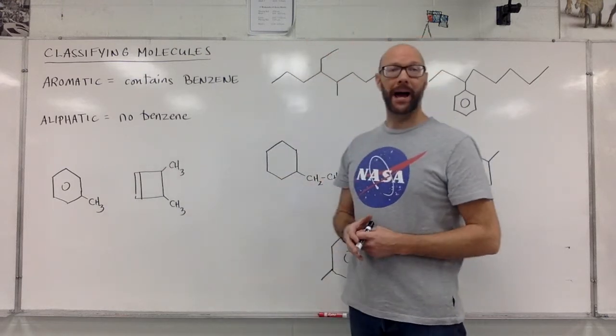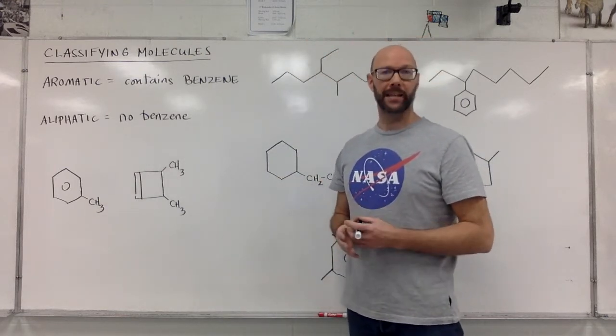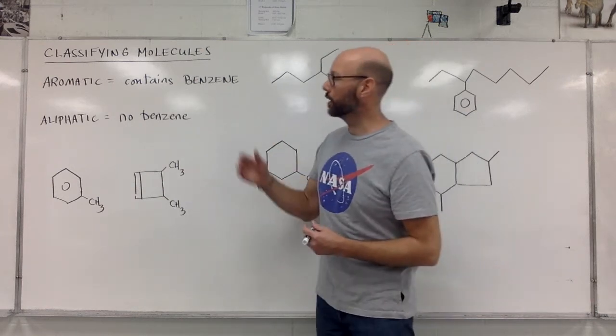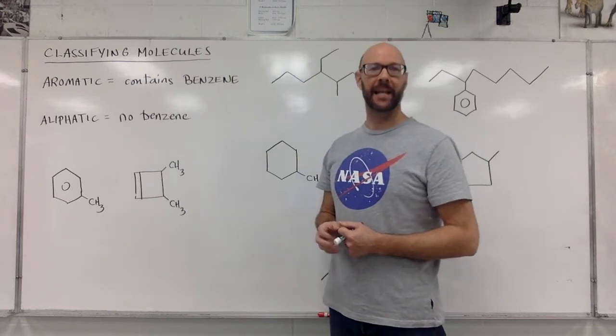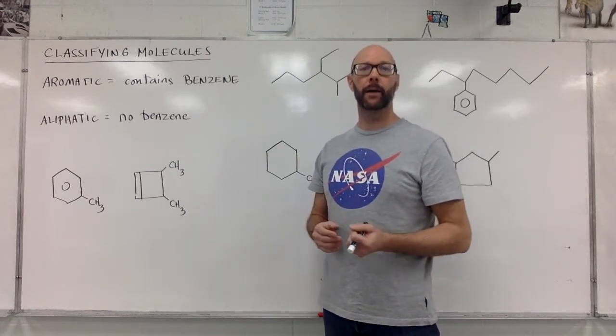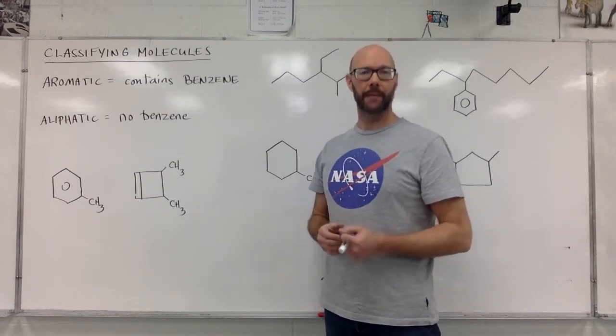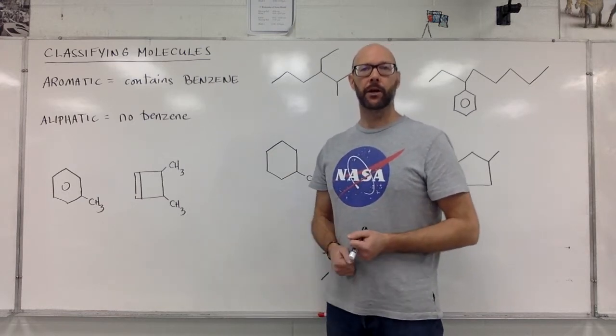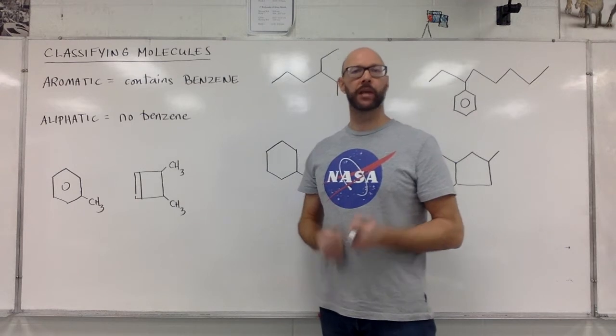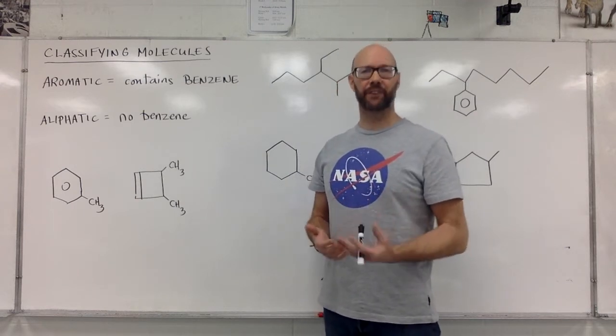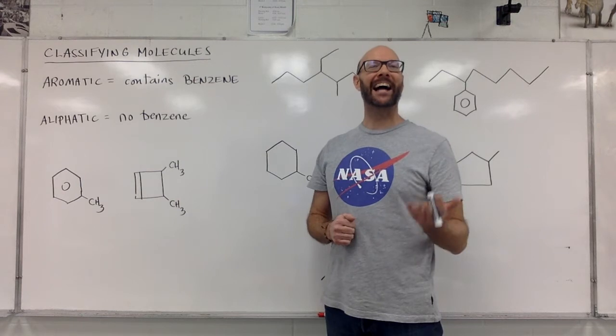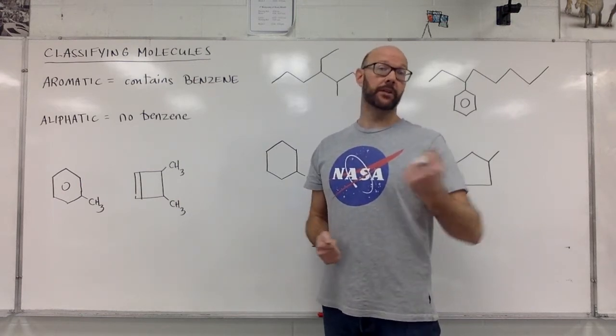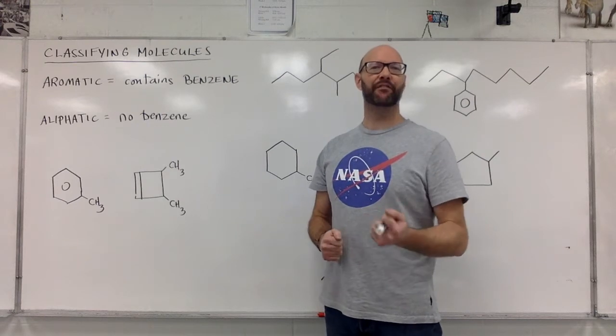They're aromatic, which means they contain benzene, as we saw in the last video, or here's a new vocabulary word for us, aliphatic. These are chemicals that are not aromatic, that do not contain benzene. Here I have a handful of examples. Let's quickly look at them and classify them as aromatic or aliphatic. It's pretty straightforward, actually. If we see benzene, it's aromatic. If we don't, aliphatic.